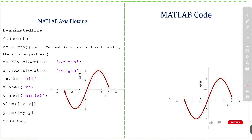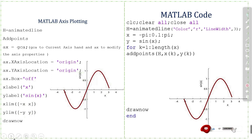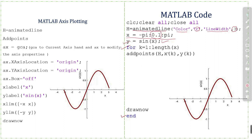Now we write the MATLAB code for the animated graph of a function. We use animatedline with the property Color set to red and LineWidth set to 3. The interval for the function is minus pi to pi with an increment of 0.1, and the function is y = sin(x). We use a for loop with addpoints(h, x(k), y(k)) and then drawnow to animate the graph.